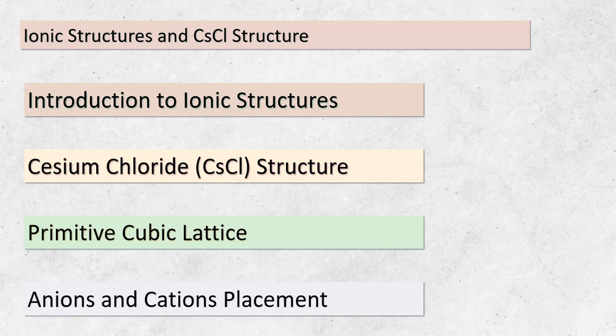Today, we're delving into the intriguing world of ionic structures and specifically the caesium chloride structure. Ionic structures are arrangements of ions in a crystalline lattice. The caesium chloride structure features a primitive cubic lattice where anions are positioned on the corners of the unit cell, and right at the center we have a cation. There isn't a lattice point within the primitive unit cell itself. This arrangement results in each cation and anion being surrounded by a cube of eight ions of the opposite type. This concept introduces us to the idea of coordination number, which indicates how many ions are in direct contact with a central ion.